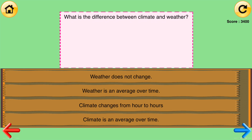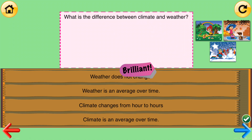What is the difference between climate and weather? Weather does not change. Weather is an average over time. Climate changes from hour to hour. Climate is an average over time. Correct answer: climate is an average over time.